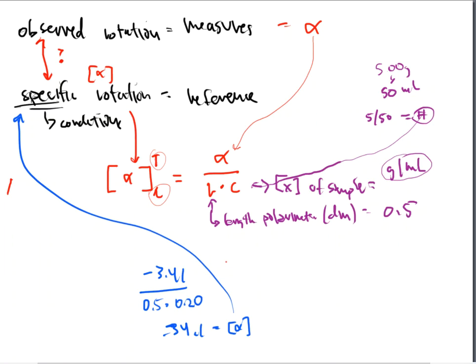So that is how we solve this equation — it's not too difficult. You'll have all of the pieces that you need. You know the observed rotation, you know the length of the cell, and you know the concentration because you made it. You'll take the actual number of grams weighed out divided by the milliliters you dissolved it in, and that number goes into the equation. You're solving for specific rotation every single time.